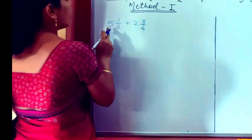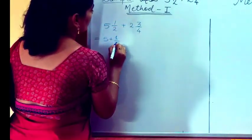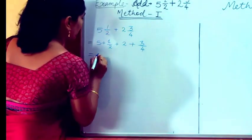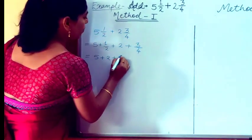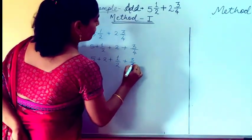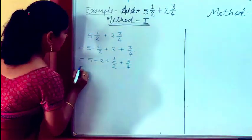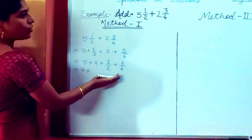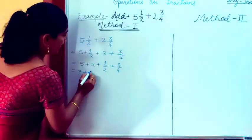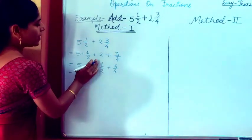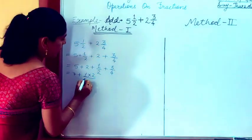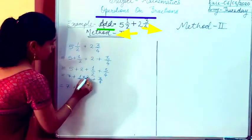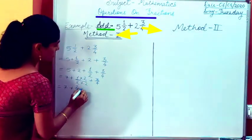So we write this as 5 plus 1 upon 2, plus 2 plus 3 upon 4. We take the same variables together: 5 plus 2, plus 1 upon 2 plus 3 upon 4. We add 5 and 2 to get 7. The denominator should be the same when adding fractions, so we multiply numerator and denominator of 1/2 by 2, giving us 2/4, plus 3 upon 4.